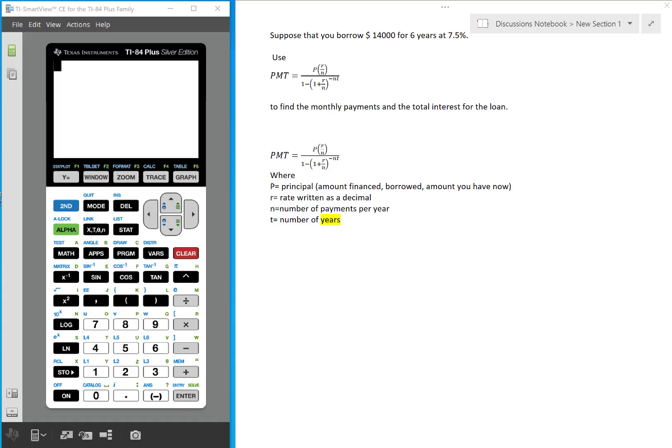Let's solve the following problem using the calculator. Suppose that you borrow $14,000 for six years at 7.5% interest rate.